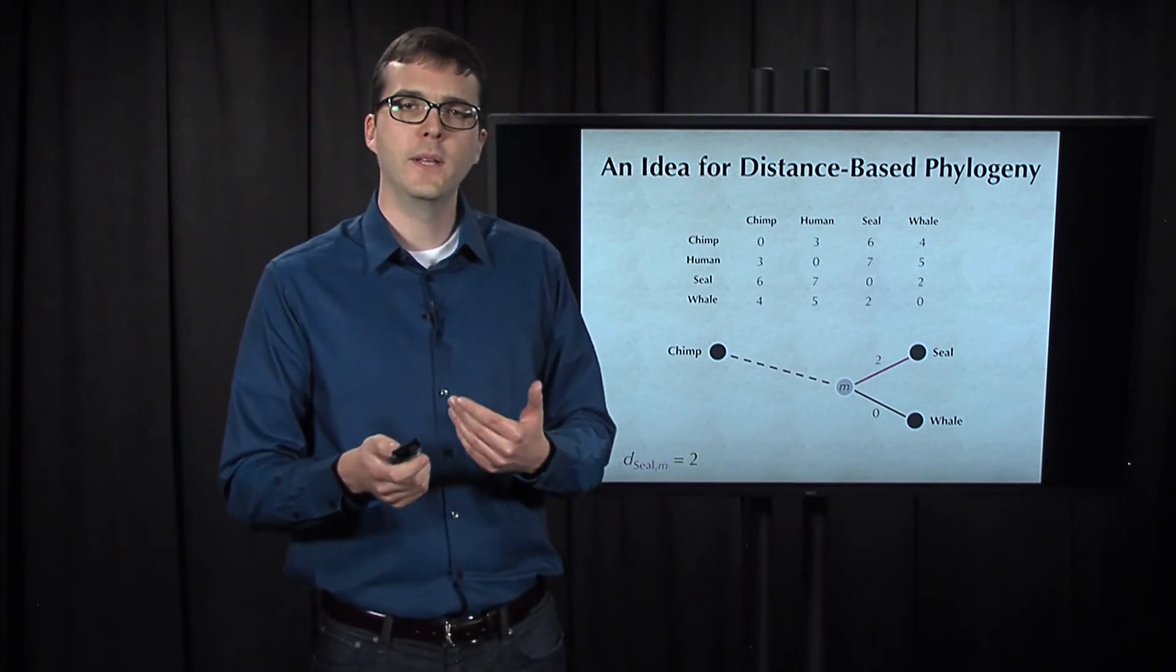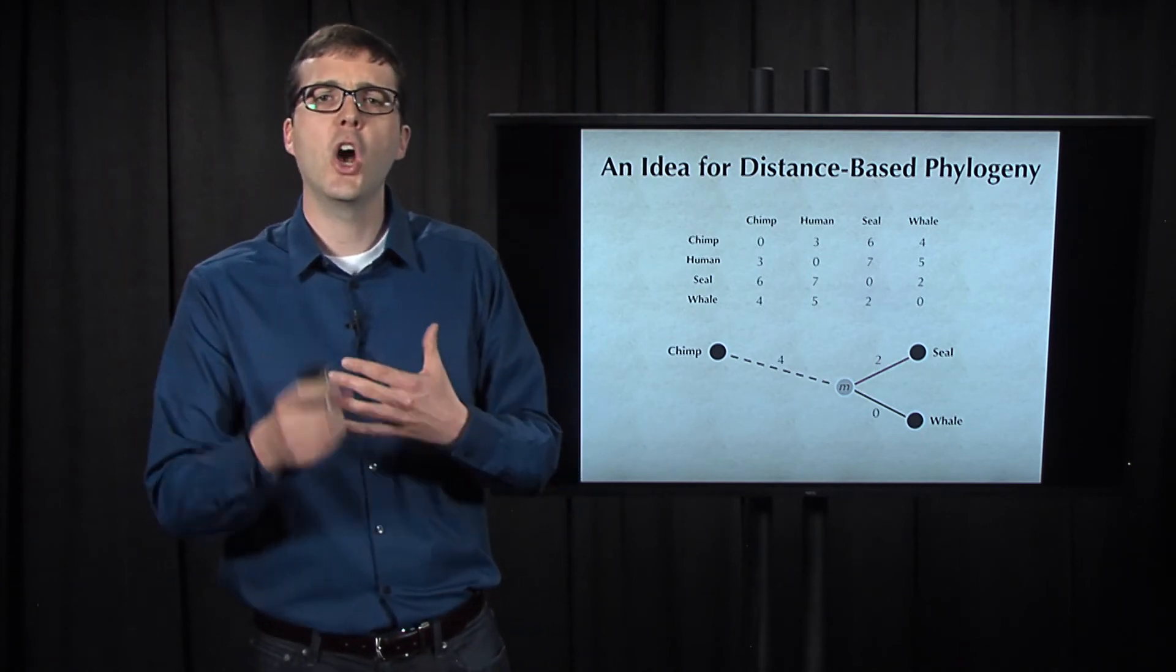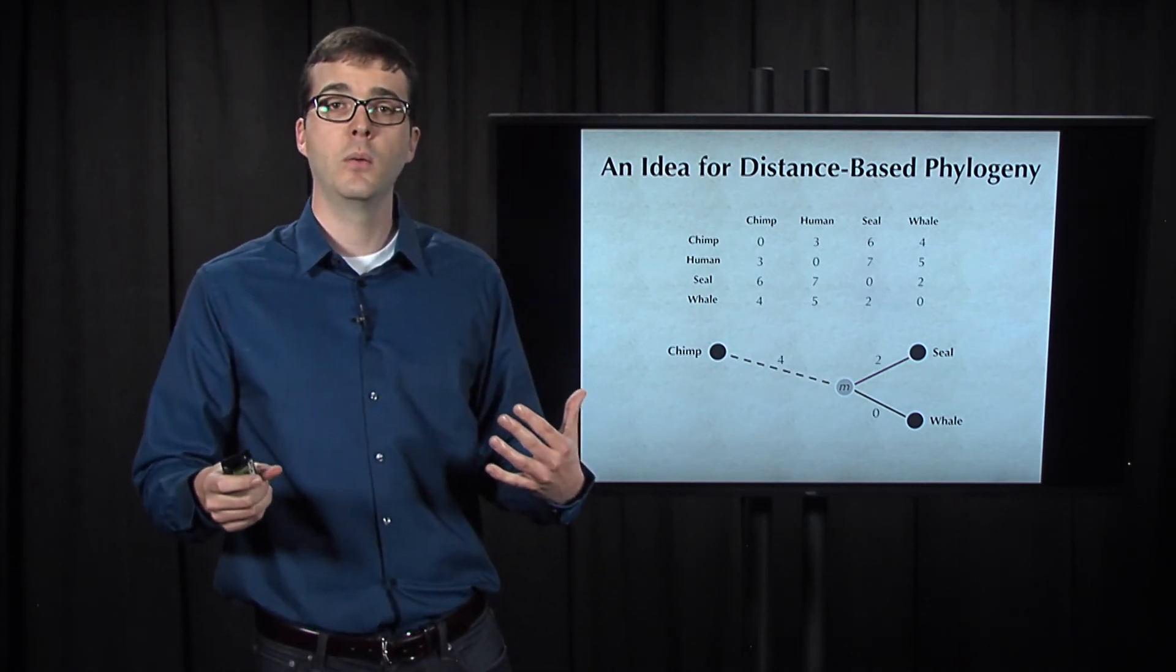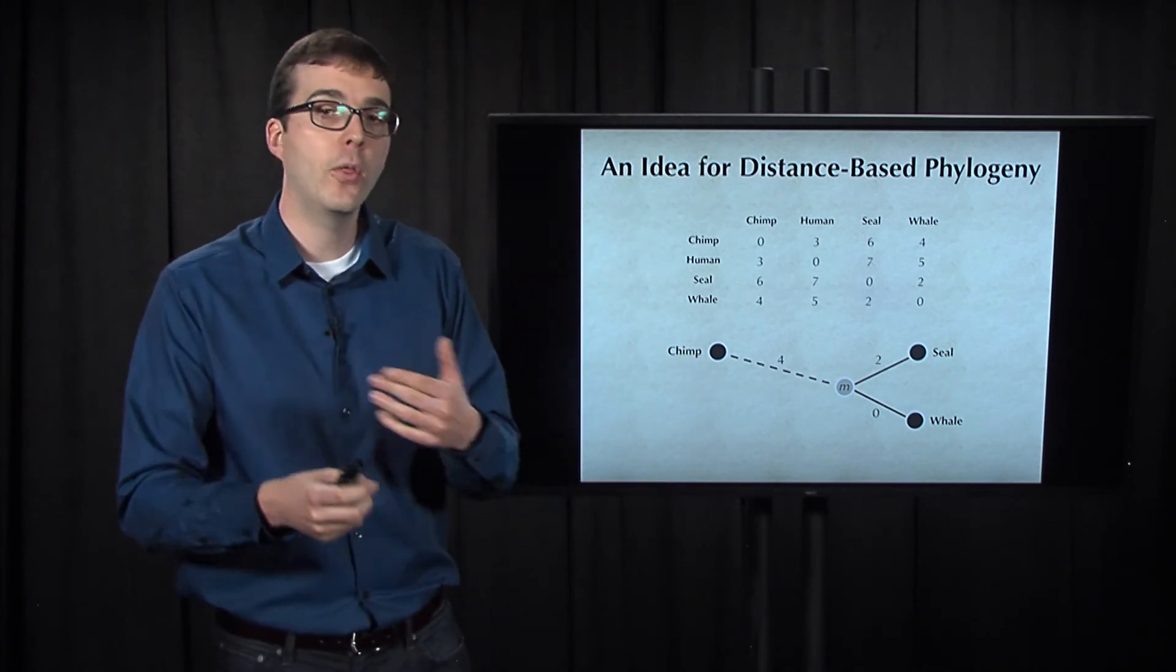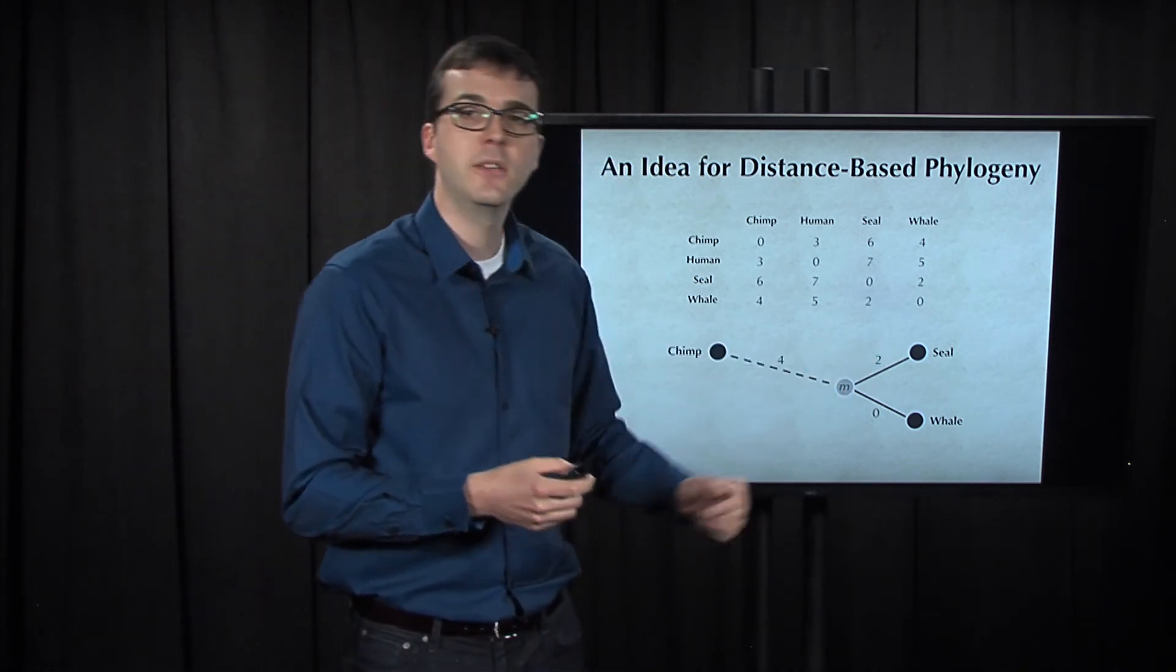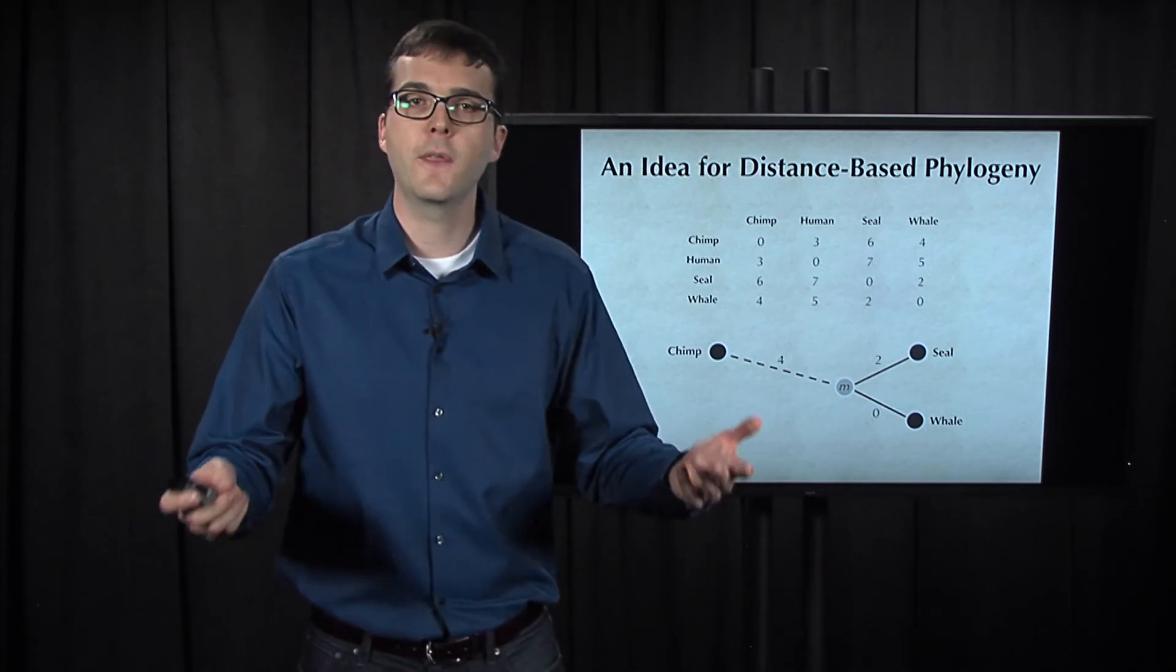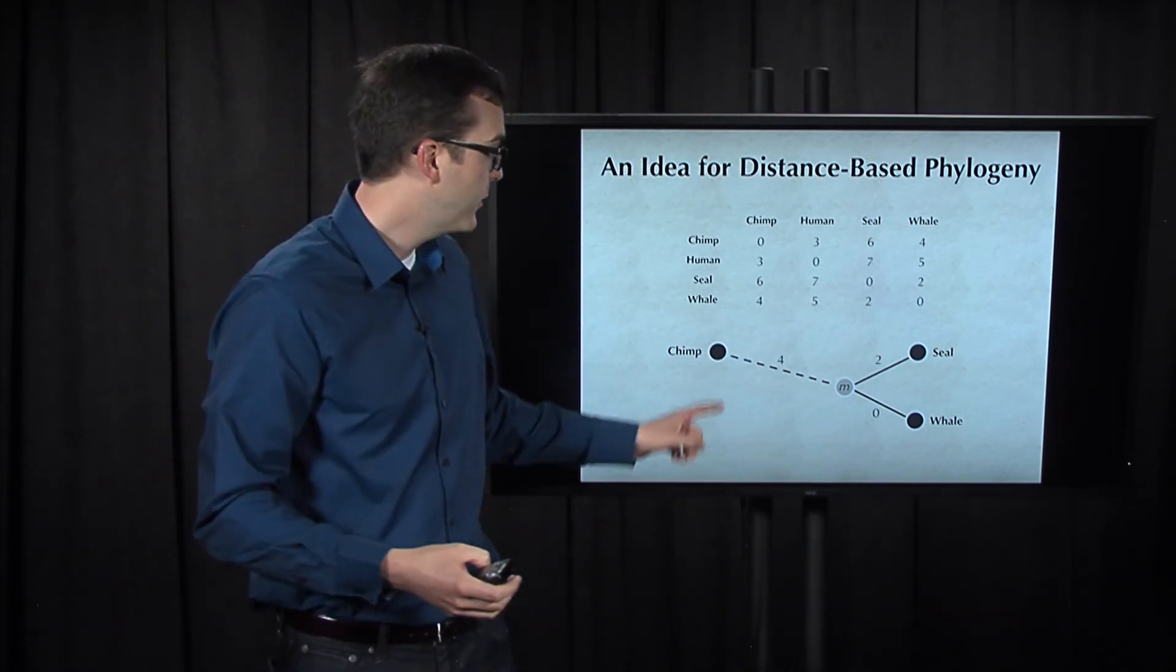The question though is, what do we do now? Well, because we know the distance from seal to chimp, which was 6, we know that from the distance matrix. And we now know that the distance from seal to m is 2, we can simply infer that the distance from chimp to m must be equal to 4.